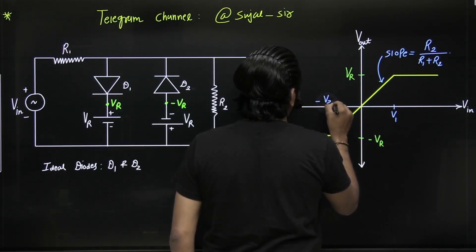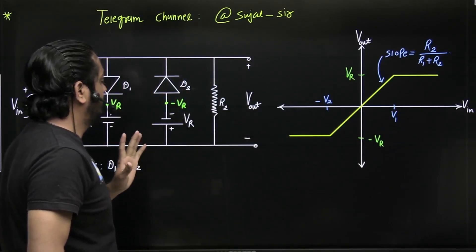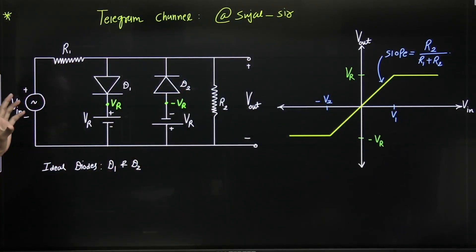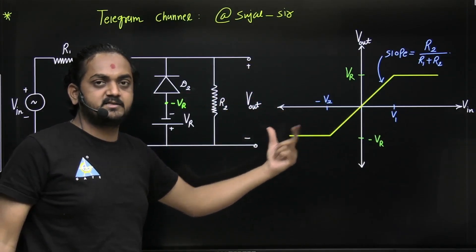Suppose this is V2. So V1 and V2 you can get easily. In this manner you can get the direct answer of this two level clipper circuit. You can save your time.